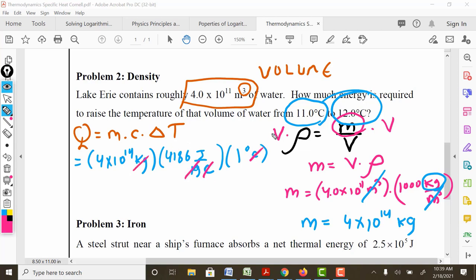Kilogram, kilogram, Celsius, Celsius. We're left with joules. The amount of heat needed to heat up this lake by one degree is going to be 1.6744 times 10 to the 18 joules.